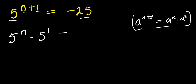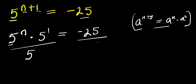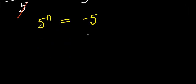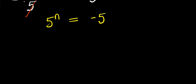So right now I need to isolate 5 power n. I divide both sides by 5, so this cancels with this. I have 5 power n equals negative 25 divided by 5, that is negative 5.